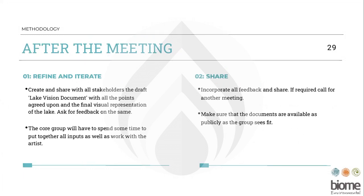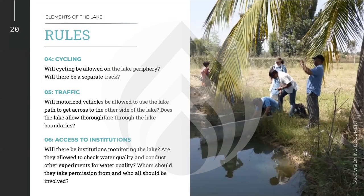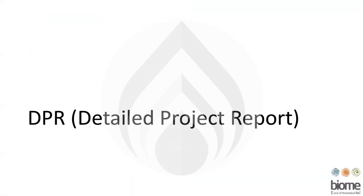After the meeting, make sure a smaller group can look at the documents, refine and iterate, take responsibility for the vision, share it continuously, and incorporate feedback. If possible, have subsequent meetings to get more or less agreement, and make sure all disagreements are documented. Rules are important — will there be pets allowed at the lake? What will the timings be? The municipal authority imposes their own timings too, so there are some rules you must adhere to, but there are some choices you can make. For example, are you going to allow cycling? Will you allow institutions to come in for measurements? Once all of these rules are clear, the lake vision document becomes the input for the DPR, or the detailed project report.